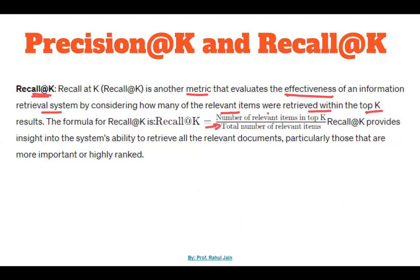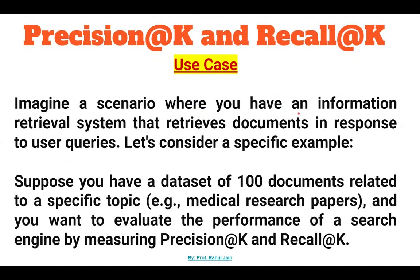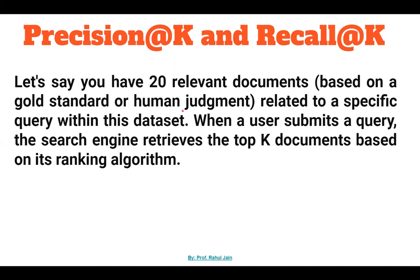The formula is: Recall@K equals number of relevant items in top K divided by total number of relevant items. Recall@K provides insight into the system's ability to retrieve all relevant documents, particularly those that are more important or highly ranked. For example, imagine a database of 100 documents related to medical research papers. You want to evaluate the performance of a search engine by measuring Precision@K and Recall@K. Let's say there are 20 relevant documents based on a gold standard of human judgment related to a specific query.